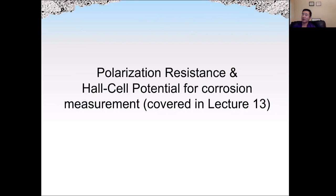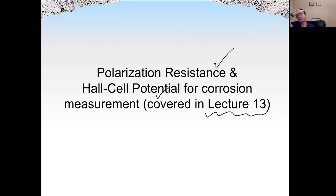Before moving on, recall that we talked about polarization resistance and the half-cell potential method in lecture number 13 on durability of concrete. In that lecture we discussed corrosion of reinforced concrete. The half-cell potential method is used to check the probability of corrosion, while the linear polarization resistance method is used to check how fast the corrosion is currently progressing.